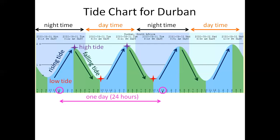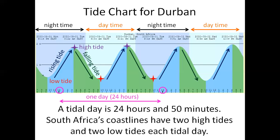If we look during that 24 hours, we see that there are two high tides, two purple stars, and two low tides, two red stars. A tidal day is 24 hours and 50 minutes. South Africa's coastlines have two high tides and two low tides each day. But because the tidal day is 50 minutes longer than the 24-hour day, tomorrow the tides are about 50 minutes later.